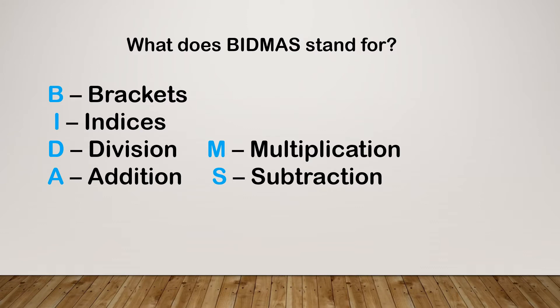So what does BIDMAS stand for? BIDMAS stands for Brackets, Indices, Division and Multiplication, and Addition and Subtraction. This is the order that we need to do sums in. The first thing we need to do is work out the value of any brackets. Then we need to deal with any indices — don't forget indices are the superscripts, so when we've got say 2 to the power of 2, or the square root of 49. Then we've got Division and Multiplication, and finally any Addition and Subtraction.